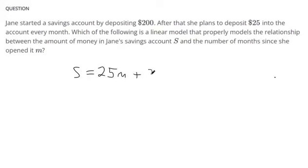This is slope intercept form. The starting amount is $200, and the slope is $25.